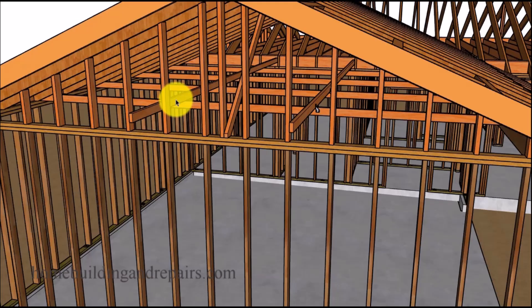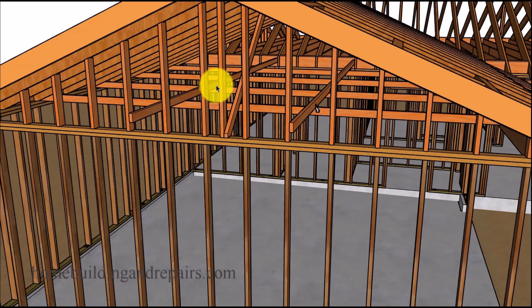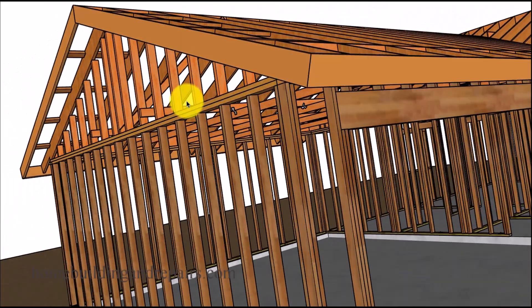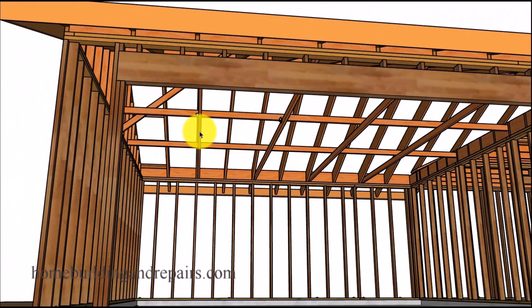Next up, let's go ahead and take a look at strong backs. Another thing that you're going to be dealing with when using rafter ties without ceiling joist. A strong back is nothing more than a piece of wood that is used to prevent another piece of wood from moving or moving as much.